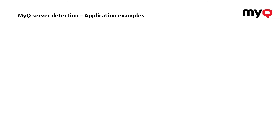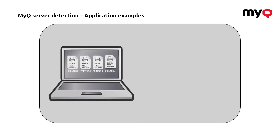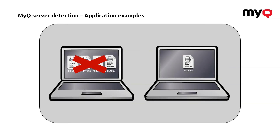In terms of application, this could be used in a multi-server installation managed by a central server where a worker travels among locations, or in installations with multiple independent servers not managed by a central one. In both cases this feature works. For the user, the difference is simple: they only have one Windows printer to select instead of multiple drivers, printers, and settings. Just one selection, regardless of location or travel — every time, just one printer, and everything prints properly.